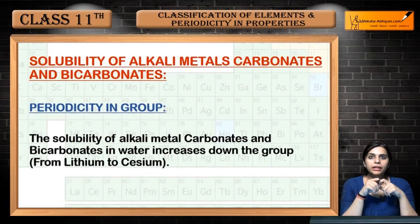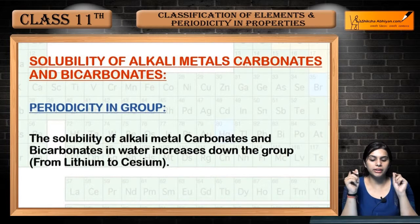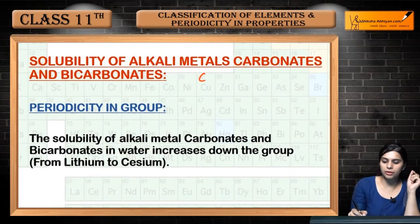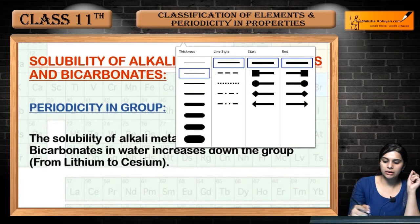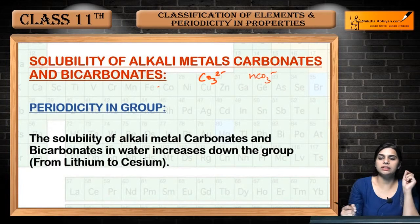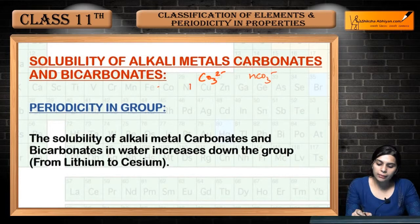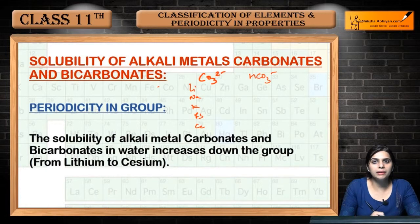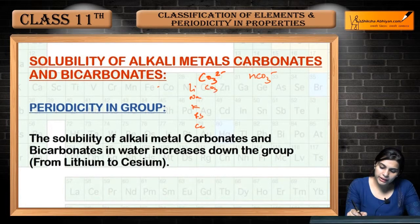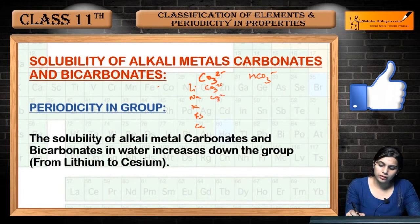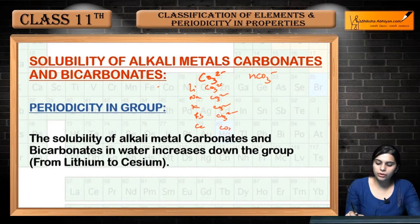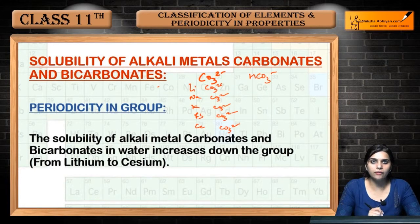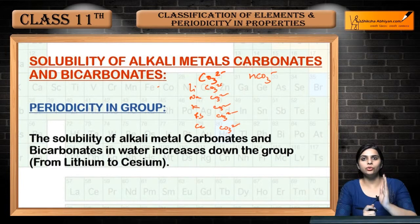Next is solubility of alkali metal carbonates and hydrocarbonates, or bicarbonates. The formula of carbonates and bicarbonates — bicarbonate contains hydrogen. We know lithium, sodium, potassium, rubidium, and caesium are the elements of alkali metals. When we create a compound with carbonate and dissolve them in water, the solubility increases as we move down the group.